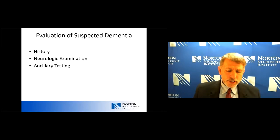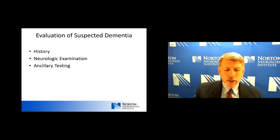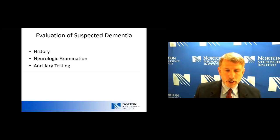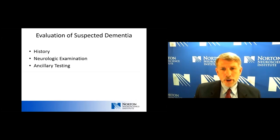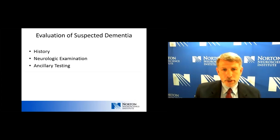Now let's turn to the evaluation of dementia. Like with most conditions, our goal is to make as accurate a diagnosis as possible, identify any reversible causes, and help guide further treatment. That really falls into three main areas: history, neurologic examination, and ancillary testing.